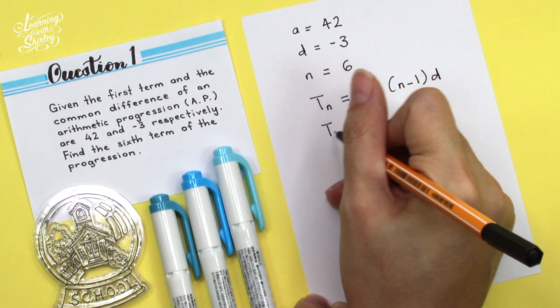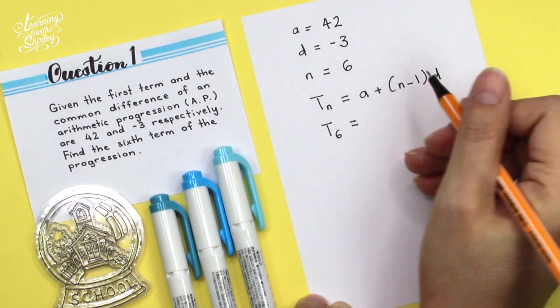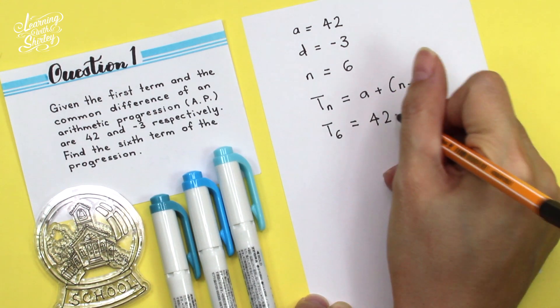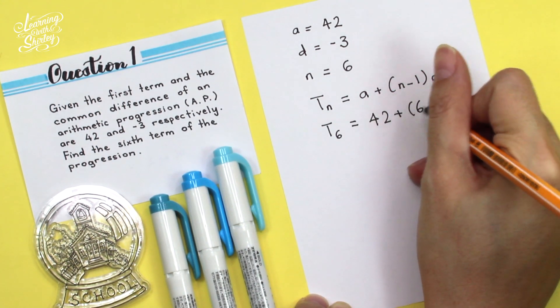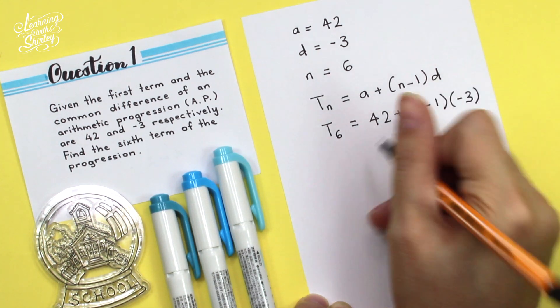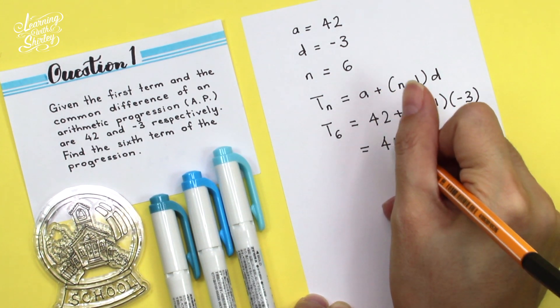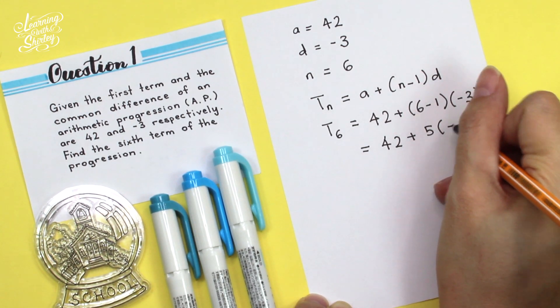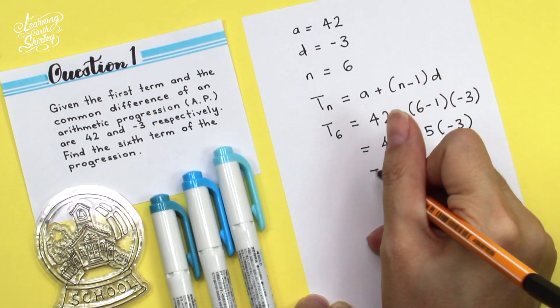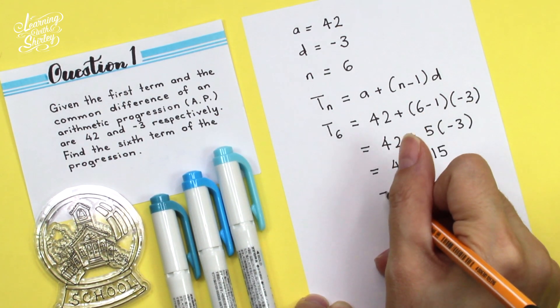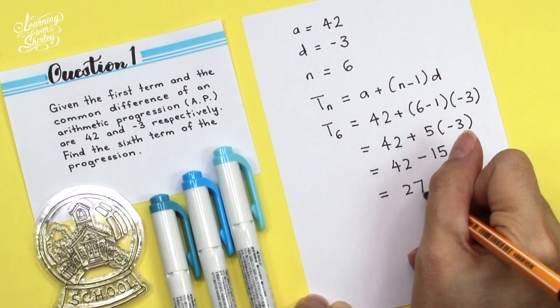So to find T6, we substitute the values of A, N and D. So A is 42 plus, N is 6 minus 1, and D is negative 3. So we get 42 plus 5 times negative 3, equals to 42 minus 15, and the answer is 27.